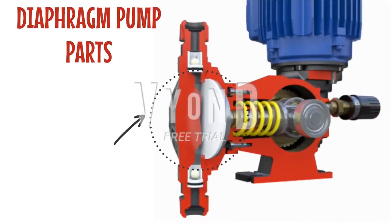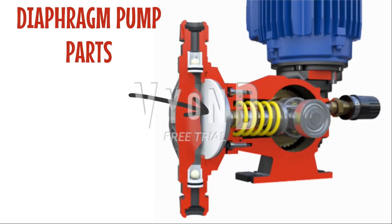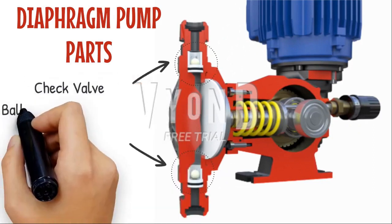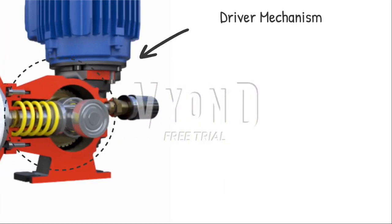A head pump body, which can be made of polyvinyl chloride, stainless steel, or polyvinylidene fluoride, makes up a diaphragm pump. The service conditions and the type of fluid to be handled decide the building materials. A flexible pulsing diaphragm, often composed of polyethylene, is another component. Two check valves, frequently made of ceramic balls and sealed with elastomer O-rings, allow flow to enter from the suction and exit from the discharge. The drive system converts the driver's rotational motion into reciprocating movement.